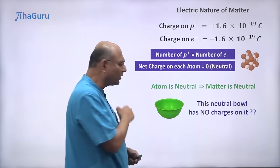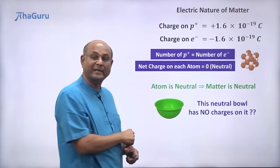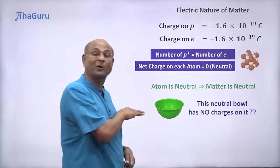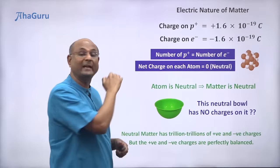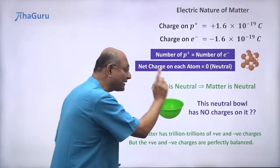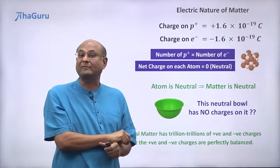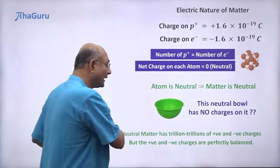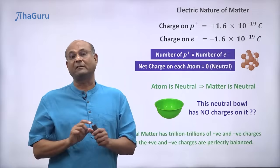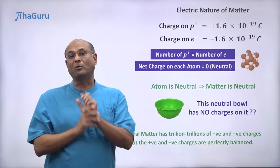Now does that mean that this bowl has no charges? This is a neutral bowl. Does it have no charges? No. It has a lot of positive charges. It has trillions and trillions of positive charges, but it also has trillions and trillions of negative charges. And the number of positive charges and the number of negative charges, they are exactly equal.